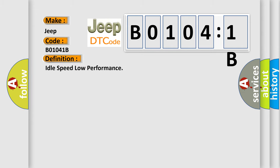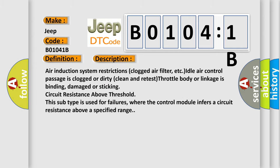Here is a short description of this DTC code. Air induction system restrictions, clogged air filter, ETC idle air control passage is clogged or dirty — clean and retest. Throttle body or linkage is binding, damaged, or sticking. Circuit resistance above threshold: this subtype is used for failures where the control module infers a circuit resistance above a specified range.